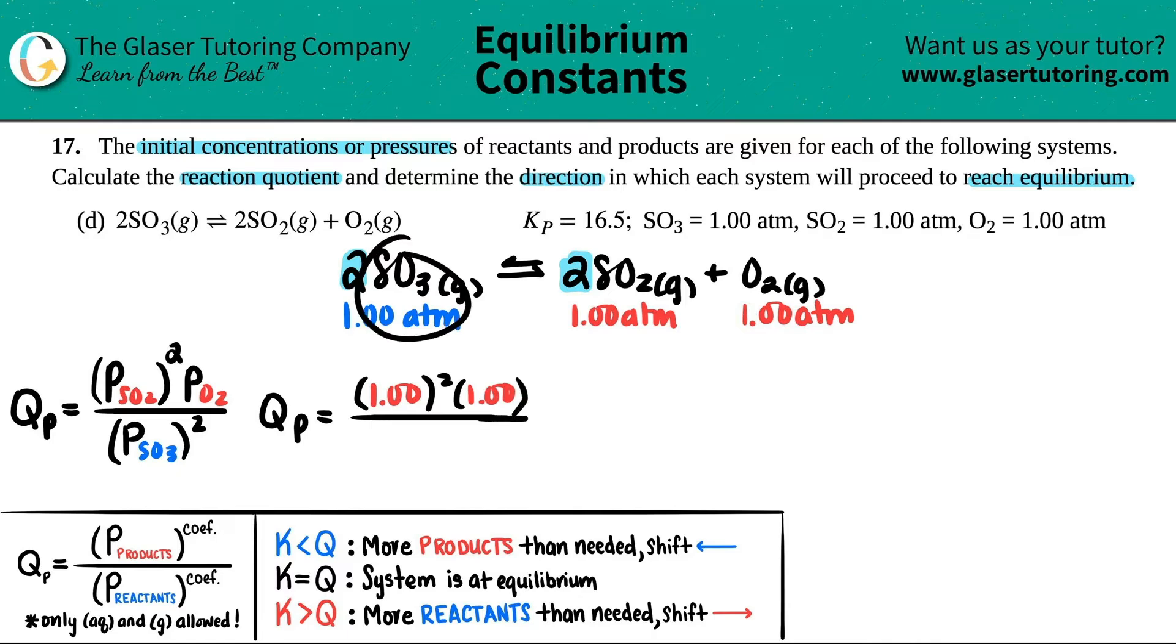And then SO₃ was also 1.00. Do you start seeing what the Q might be? This has to be squared. The top, we have just ones, so it's one, or if you want to say 1.00. And then the bottom is the same thing—one squared is 1.00. So the Q is just going to be one.